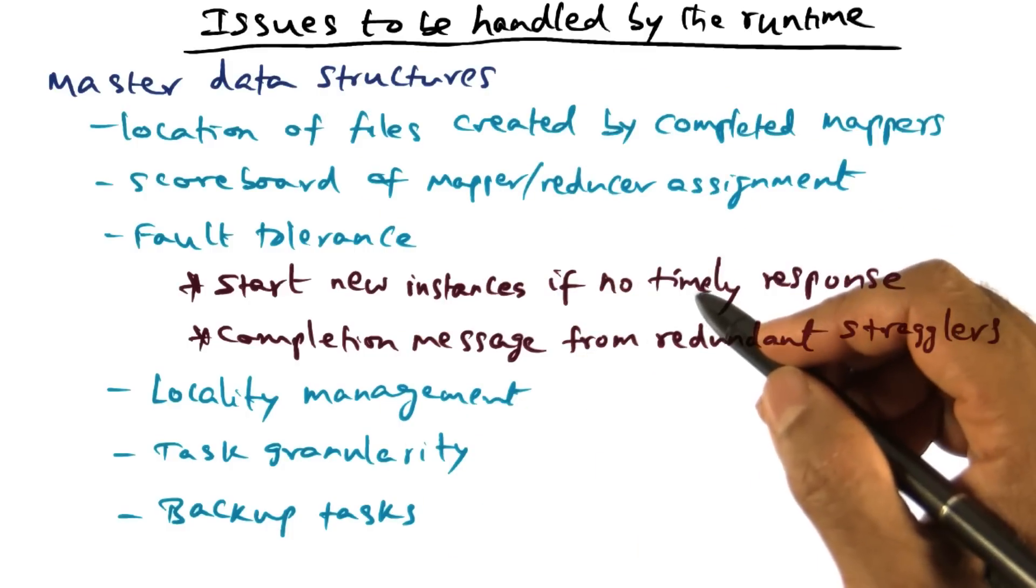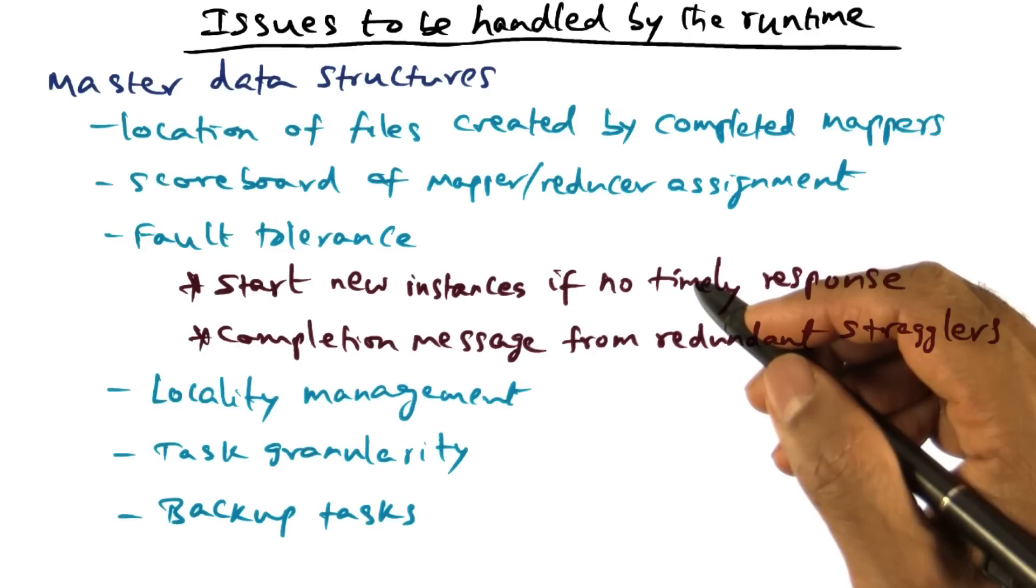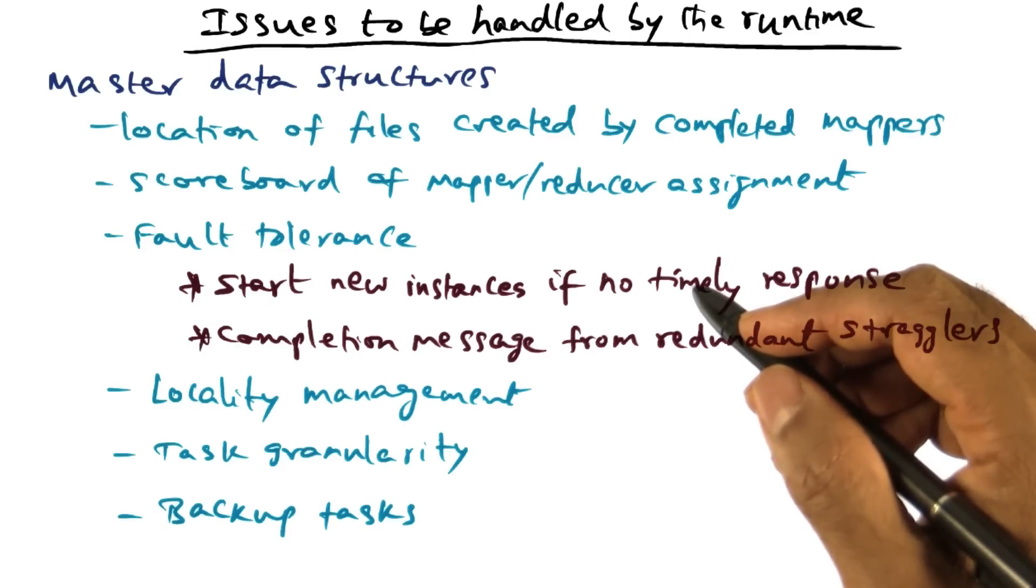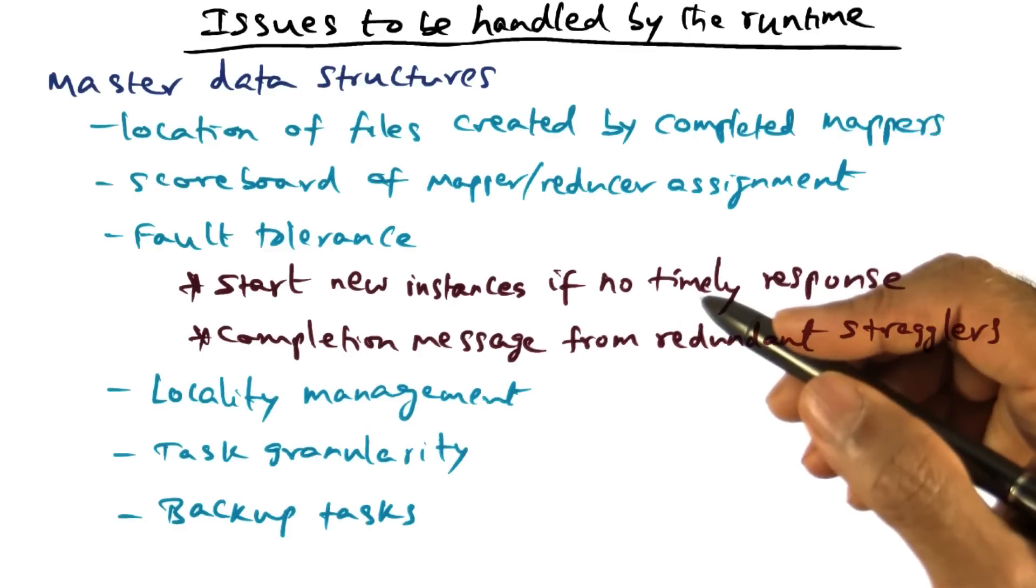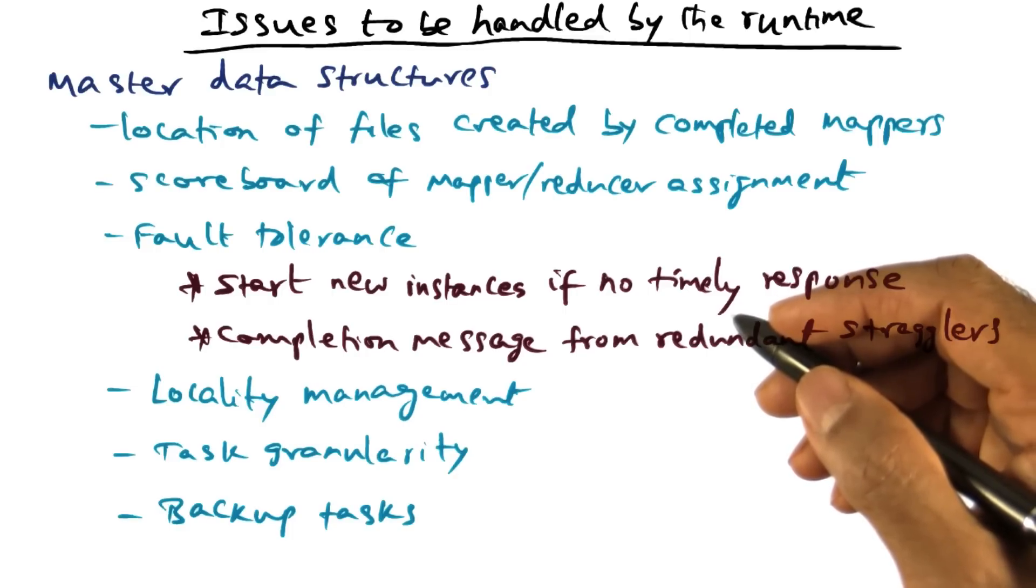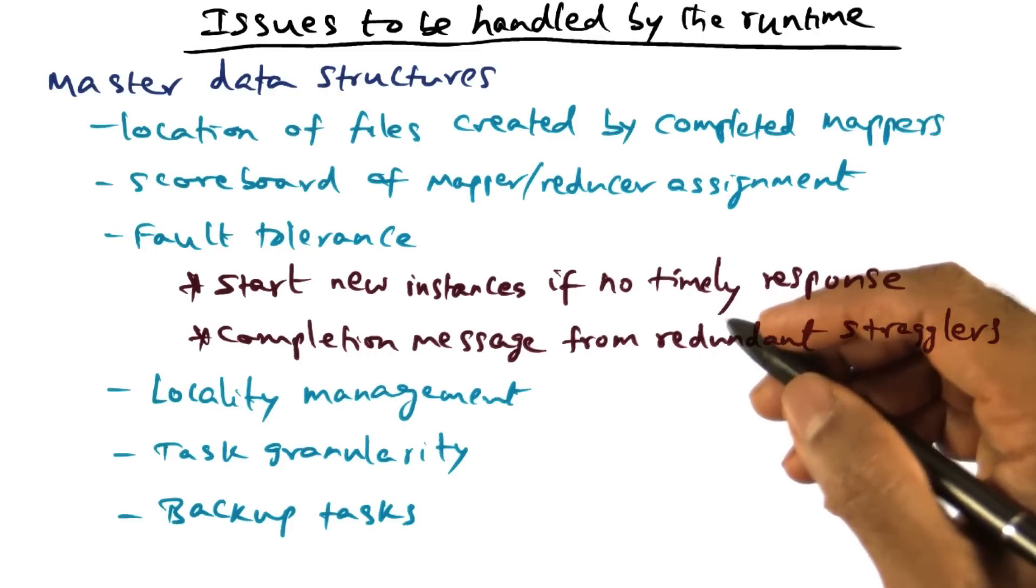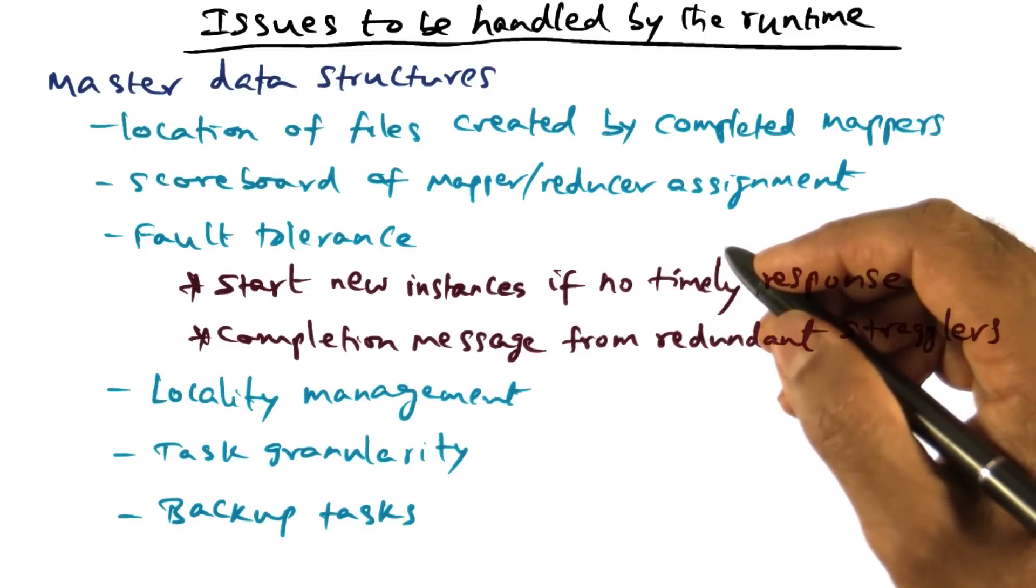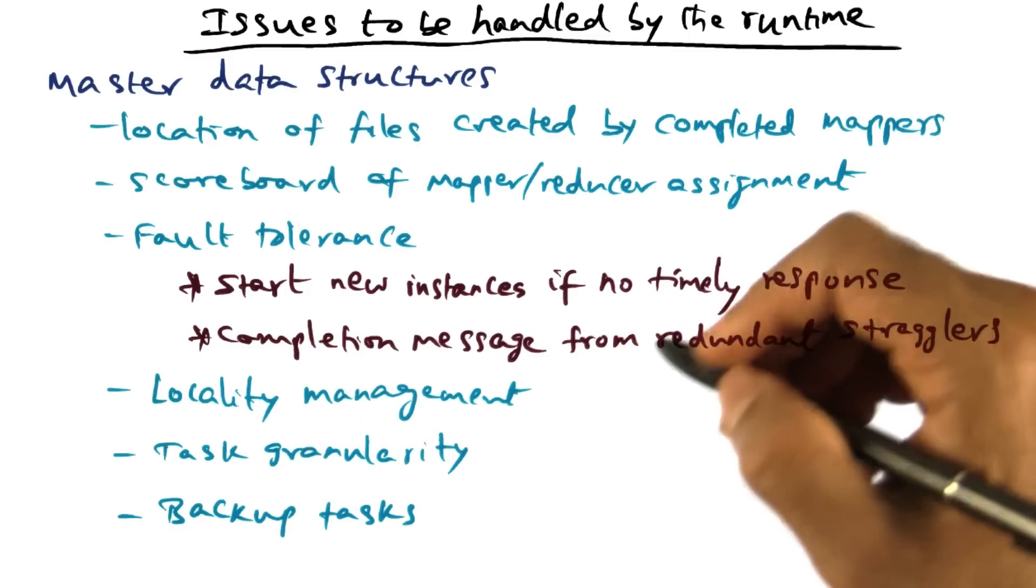And the programming framework also offers several refinements to the basic model. The way the partitioning of the input data space is done is by using a hash function that is built into the programming environment. But the user can override that partitioning function with his or her own partitioning function if they think that that will result in a better way of organizing the data. And in the MapReduce framework, there is no interaction between the mappers. But if there is some ordering guarantees that are needed in terms of ordering the keys and so on, that is something that the user may have to take care of.